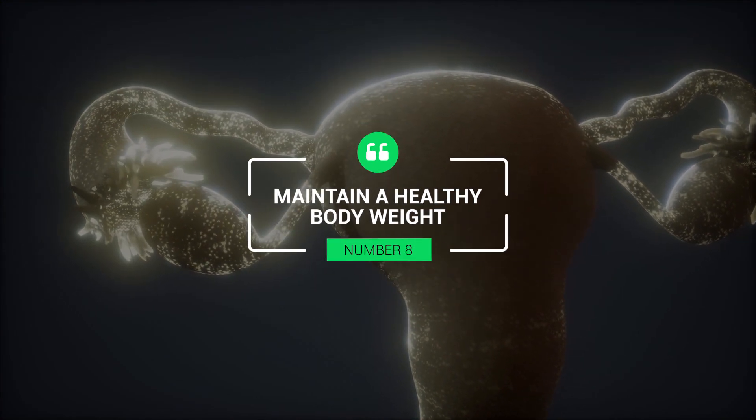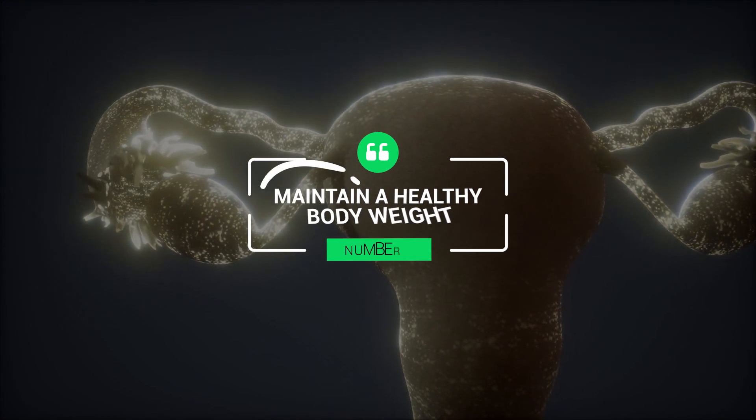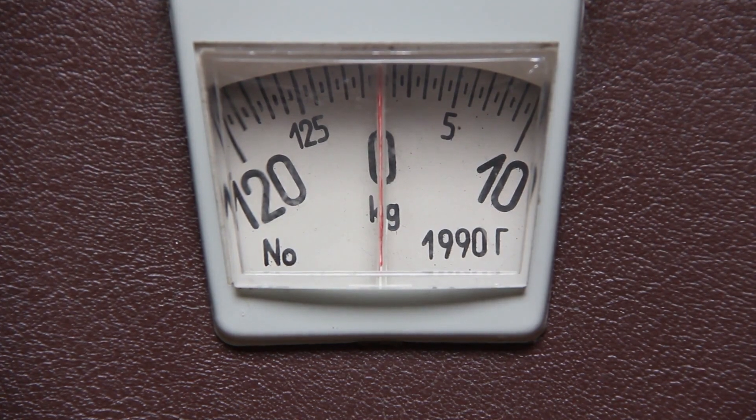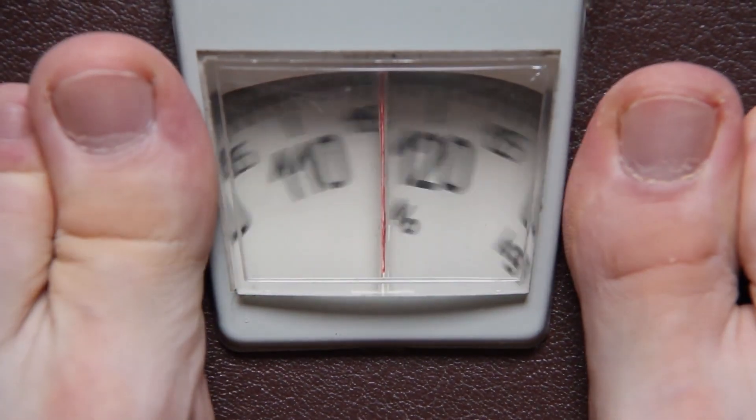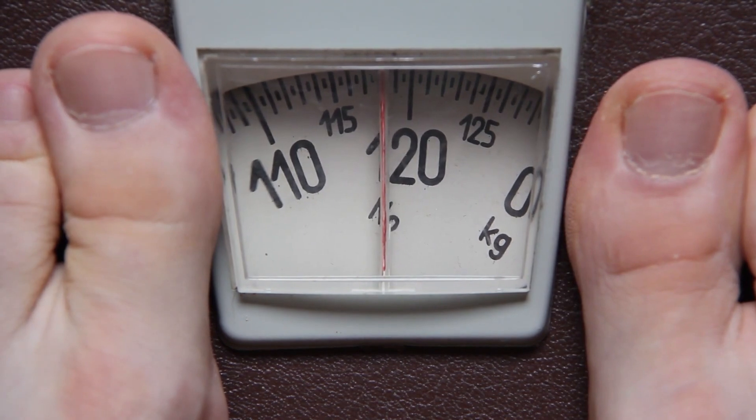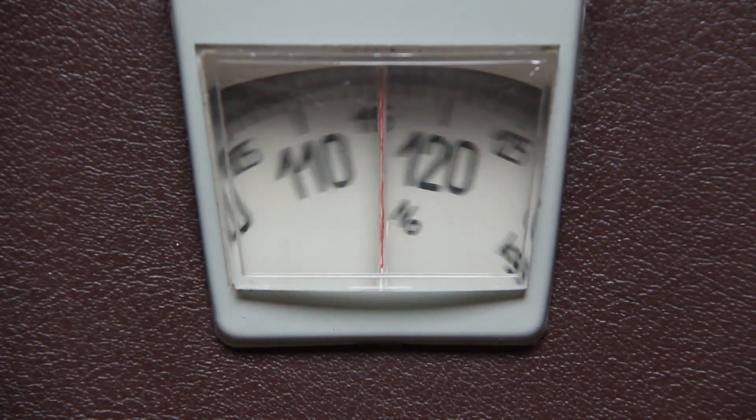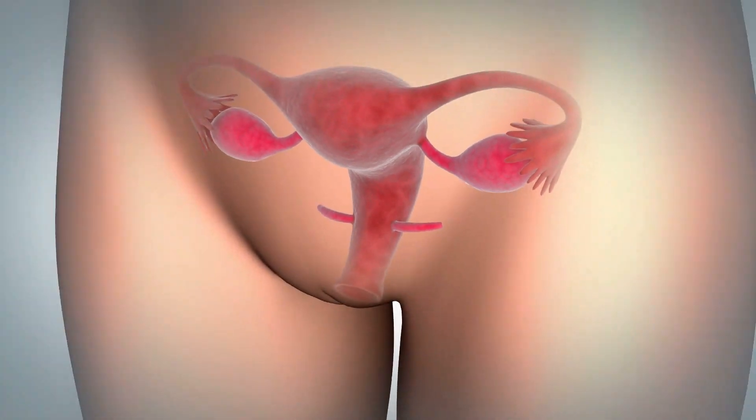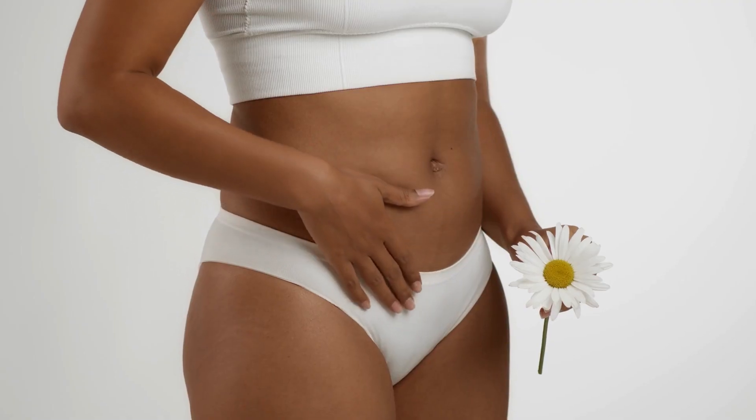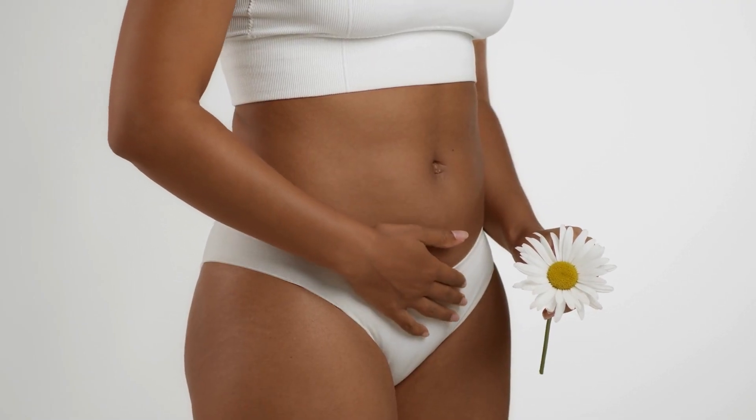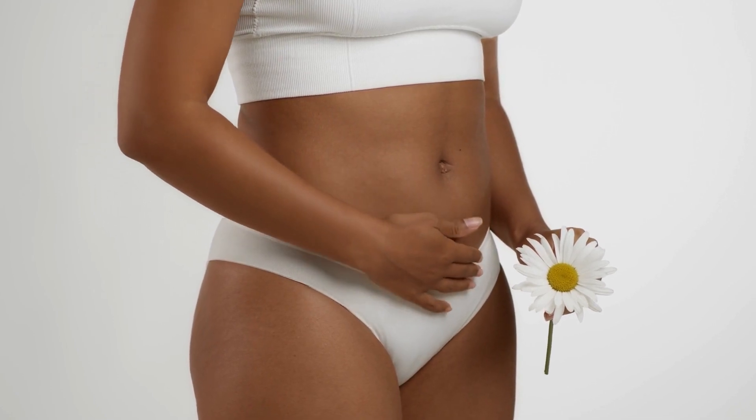8. Maintain a healthy body weight. It's important to maintain a healthy body weight as abnormally low or abnormally high fat levels can affect the production of progesterone and your overall hormone balance. Fat cells produce estrogen, so an abnormally high amount of fat cells may result in estrogen dominance. Estrogen dominance can actually lead to low progesterone as the two hormones need to remain balanced.